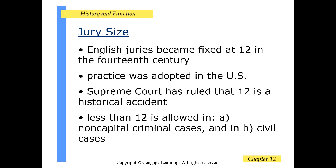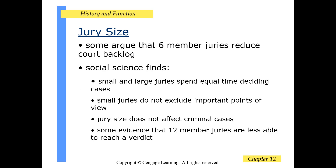English juries became fixed at 12 in the 14th century, and this practice was adopted in the United States. The Supreme Court has ruled that 12 is a historical accident. Less than 12 is allowed in non-capital criminal cases and in civil cases. Some argue that six-member juries reduce court backlog. Social science has found that small and large juries spend equal time deciding cases, small juries do not exclude important points of view, jury size does not affect criminal cases, and some evidence shows that 12-member juries are less able to reach a verdict.